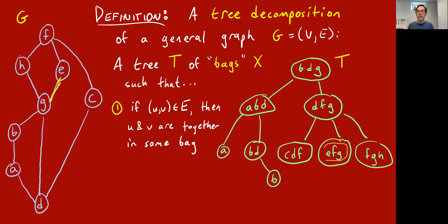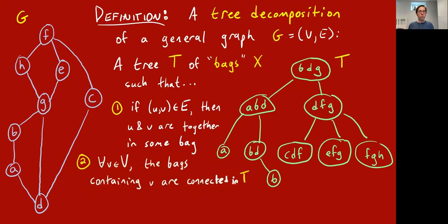We look over here and find it — here's the bag that has E and G together in it. Another edge, say DG: there has to be at least some bag that has D and G in it, and actually we've got a couple — this one has it and this one has it. That's rule one.